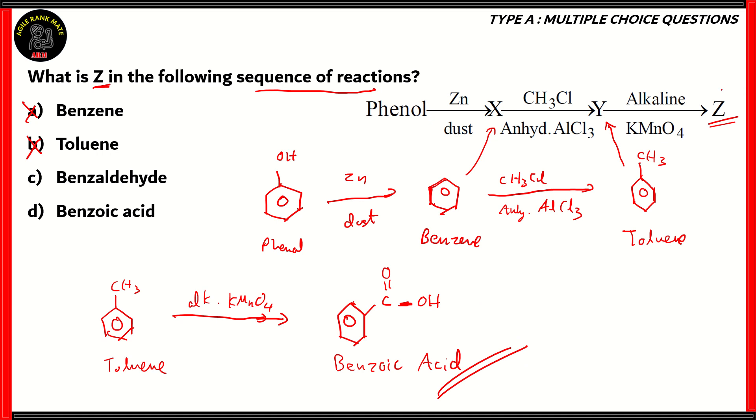And benzoic acid corresponds with the product Z. That's the question that was asked. What is Z in the following sequence? In the following sequence, Z turns out to be option D, benzoic acid.